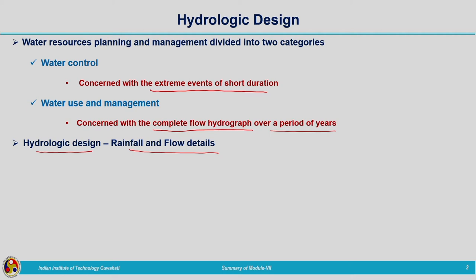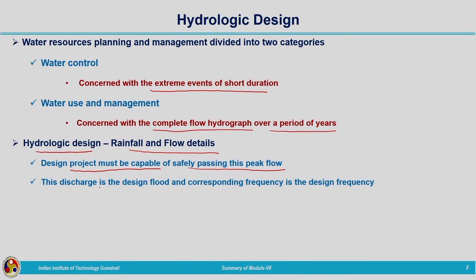Because we do not know what will be the magnitude of the event which will occur tomorrow. But for a structure there is a certain lifespan — a design life. During this design life the structure should be stable; there should not be any failure of the structure during this lifespan initially decided. The design project must be capable of safely passing the peak flow — that may be an extreme flow or a flow related to a particular return period. This discharge is termed as the design flood, and the corresponding frequency is the design frequency.